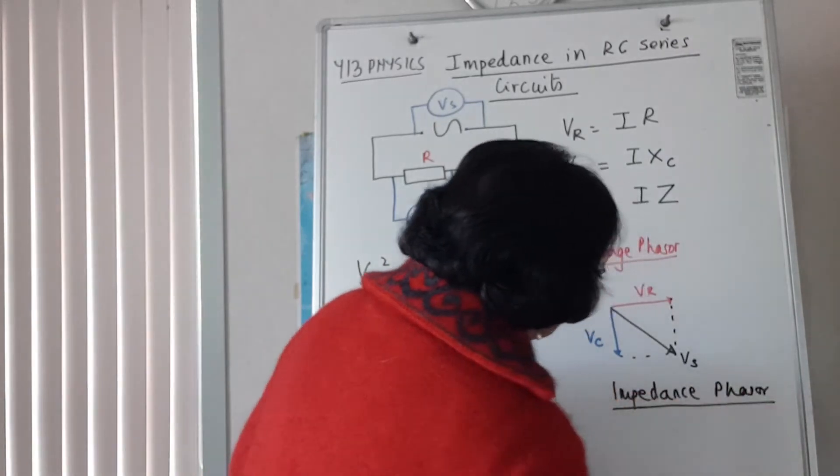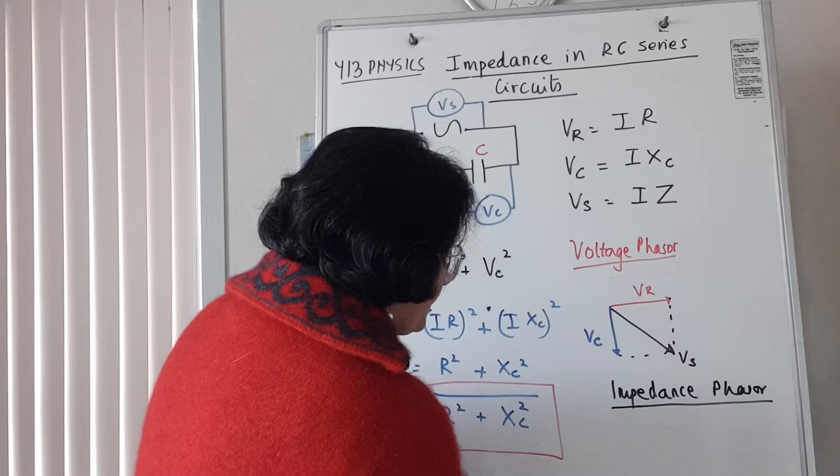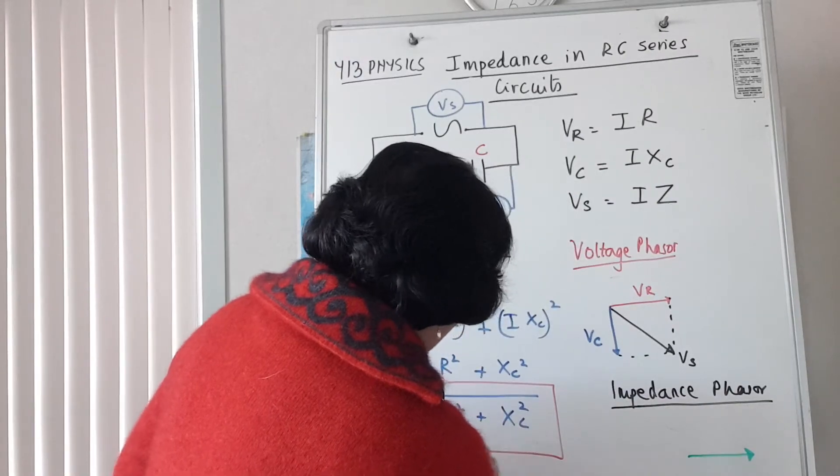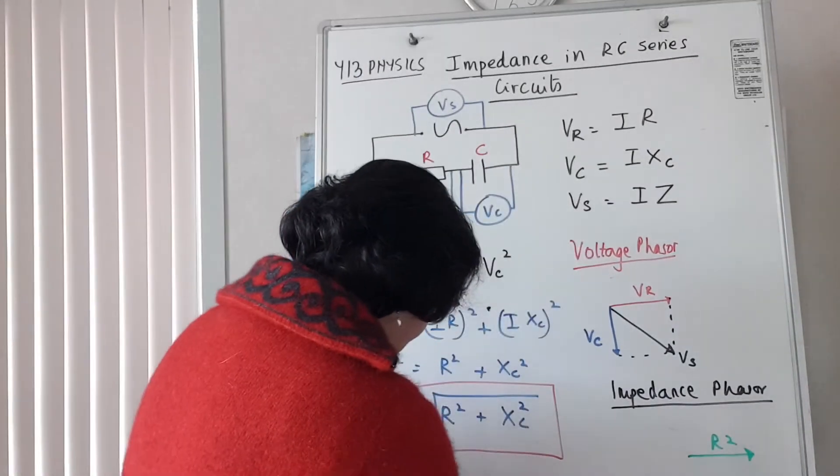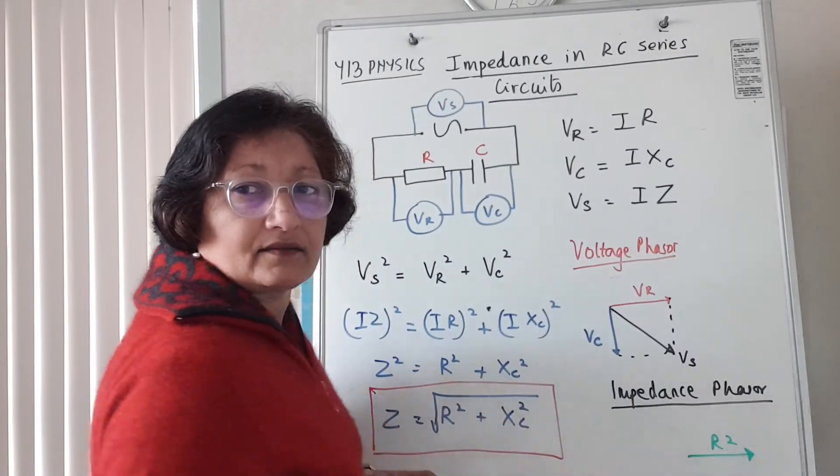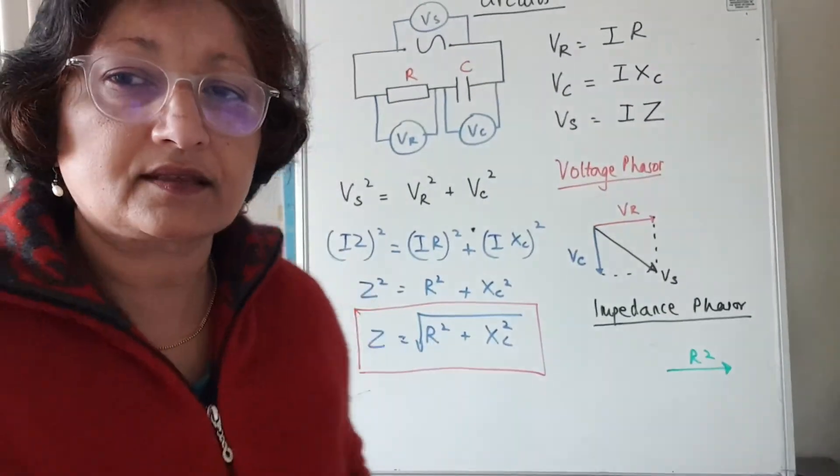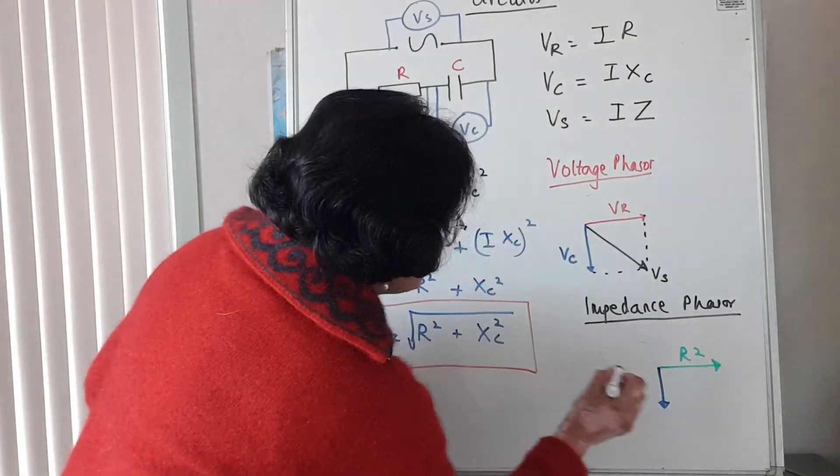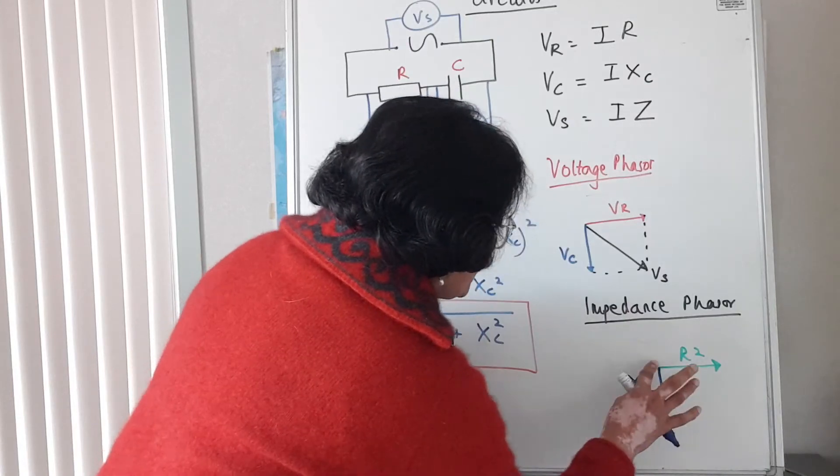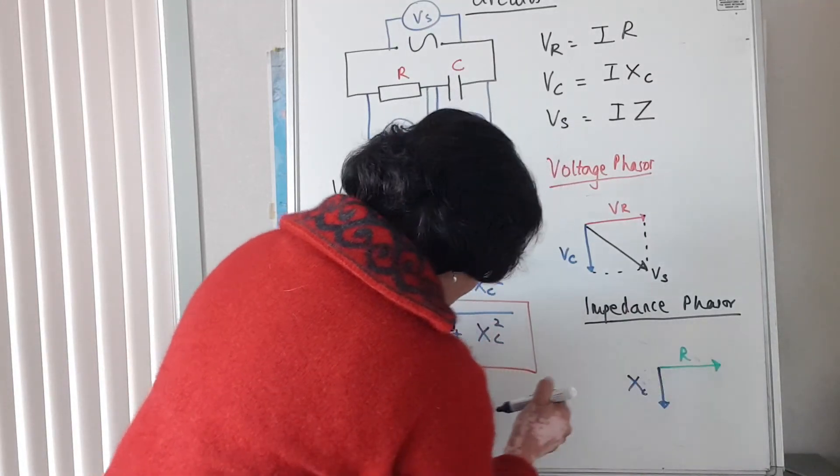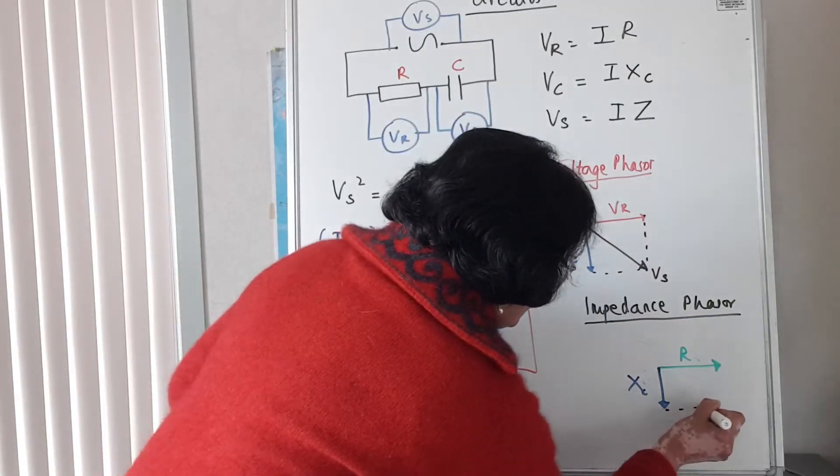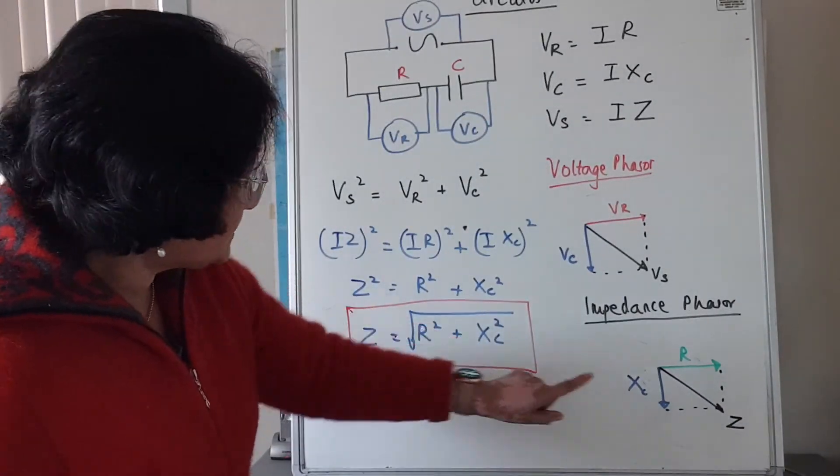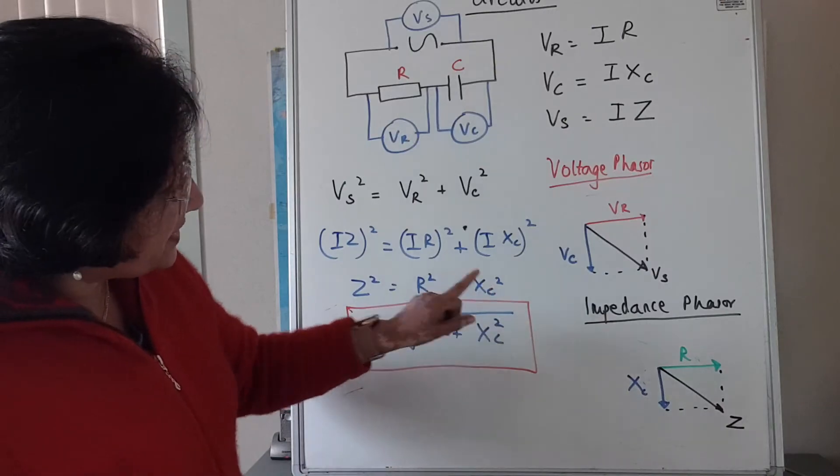Instead of voltage across the resistor, I've got R here, and XC over here, and that's my Z. That's how I get Z² = R² + XC².